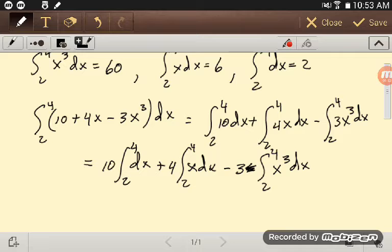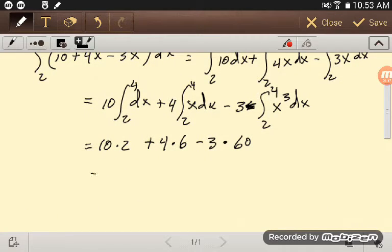And now, since we know what these are, so this first is 10 times 2, and then plus 4 times 6, and then minus 3 times 60. And so that gives us 20 plus 24 minus 180, and that's 44 and minus 180, so that's minus 136.